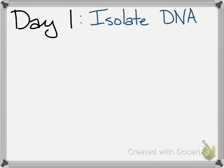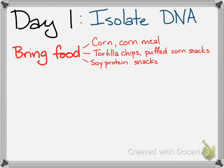Focusing on day one — the isolate DNA day — there are approximately three steps. The first step is you've got to bring food; we have to have something to extract DNA from. The best options are fresh corn, fresh papaya, cornmeal, cornmeal found in a cake mix or jiffy cornbread mix. You could also do tortilla chips, puffed corn snacks, some kind of soy protein snacks, or veggie burgers. I've even gone to a gas station and gotten really cheap meat snacks, which are normally loaded with veggie-based protein instead of meat — that's why they can be so inexpensive.